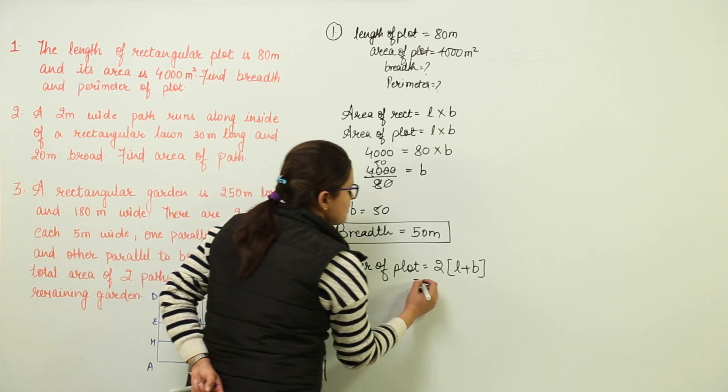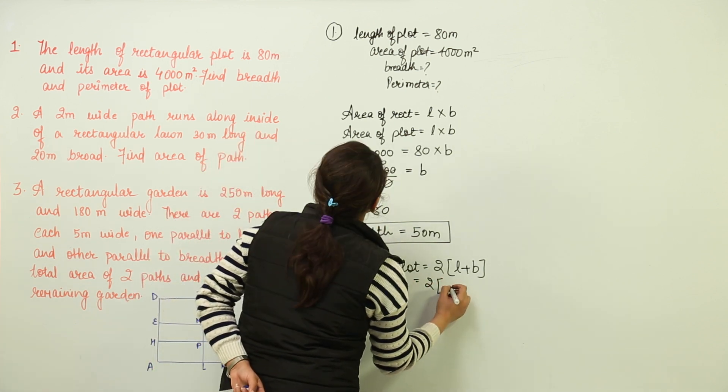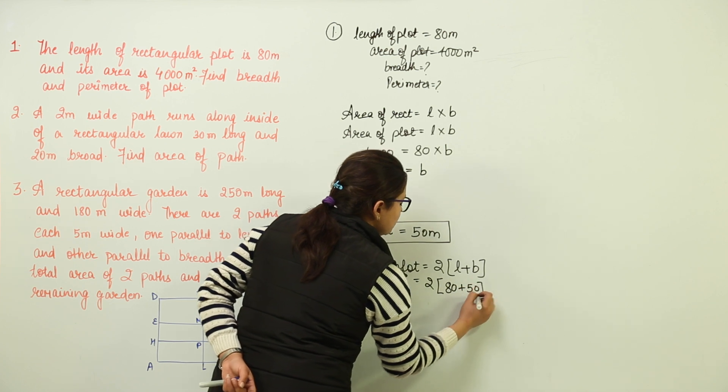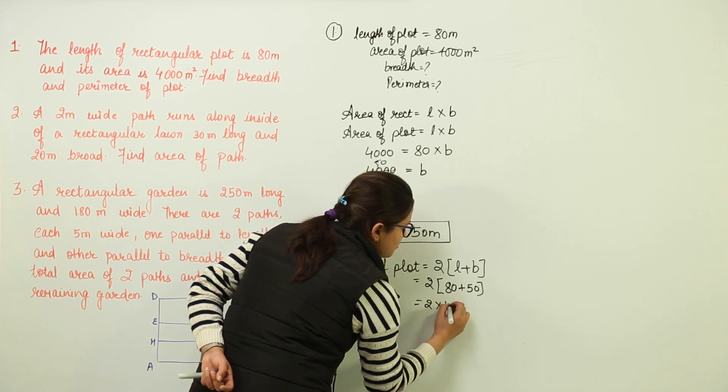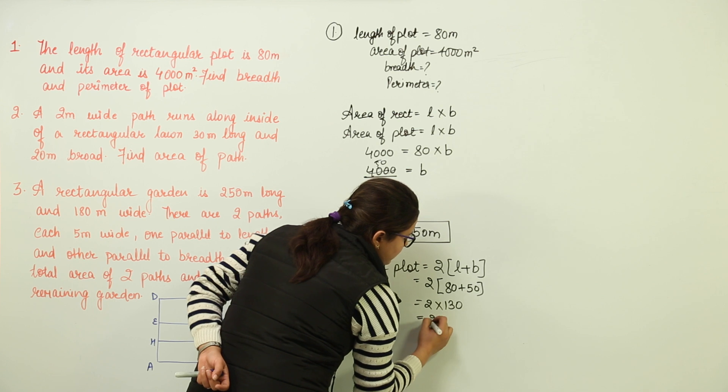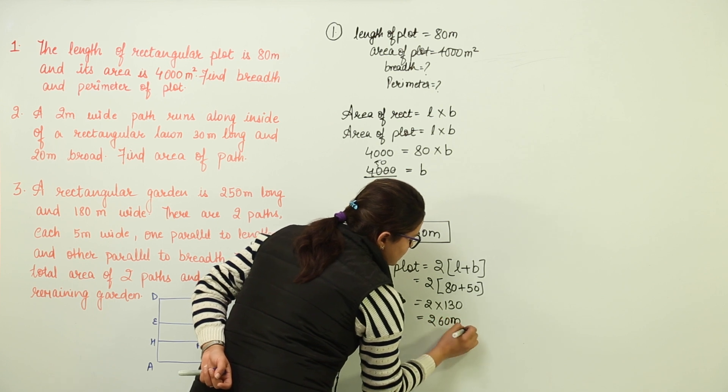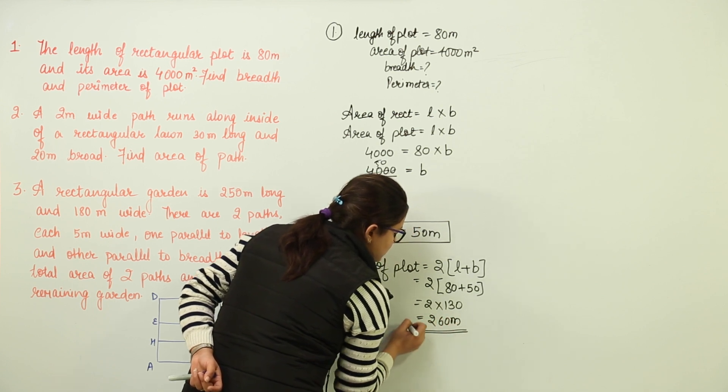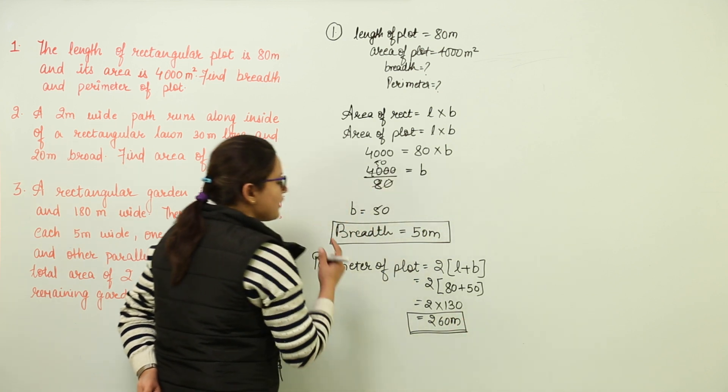So we will place the values of length and breadth, that is 80 and 50. We get 2 into 130, that gives us 260 meters. Now 260 meters is the perimeter of this rectangular plot.